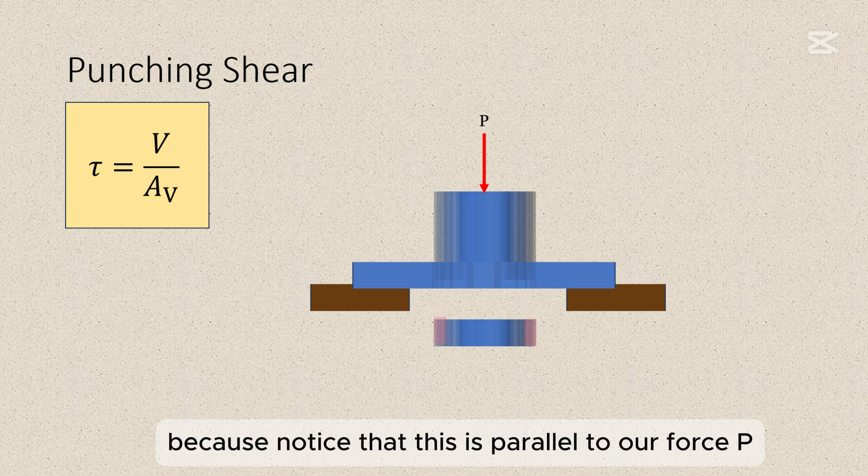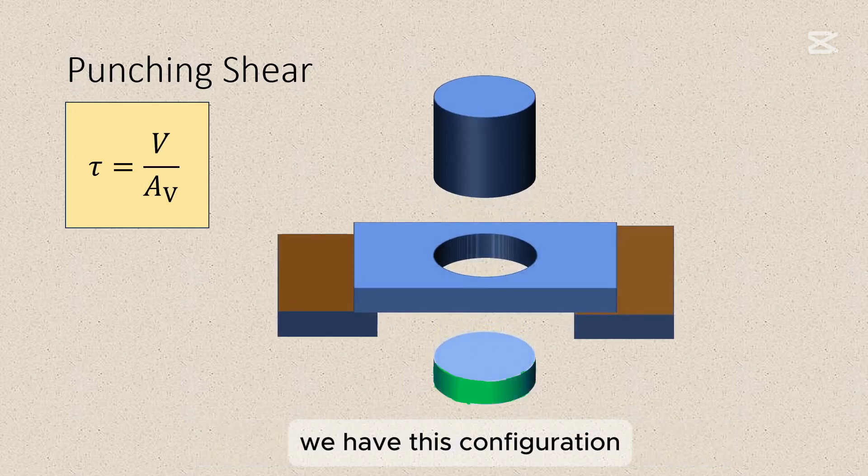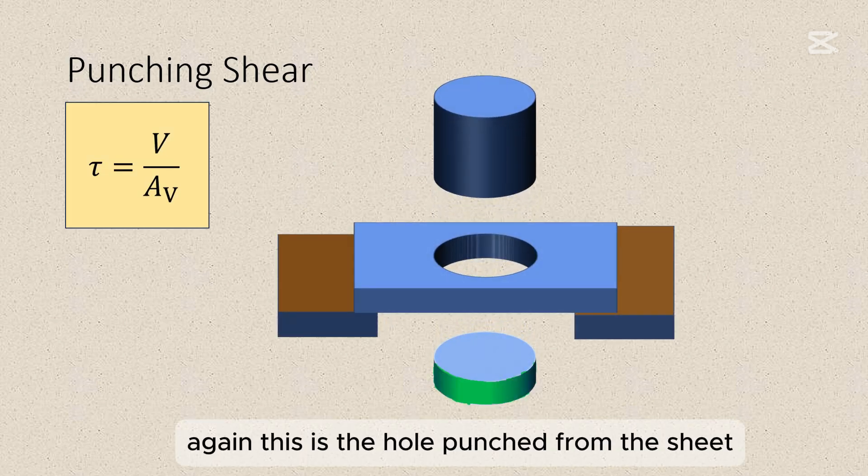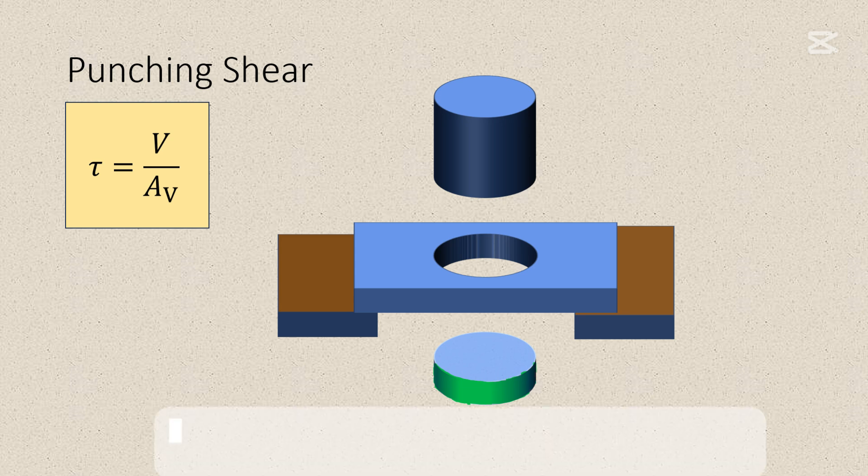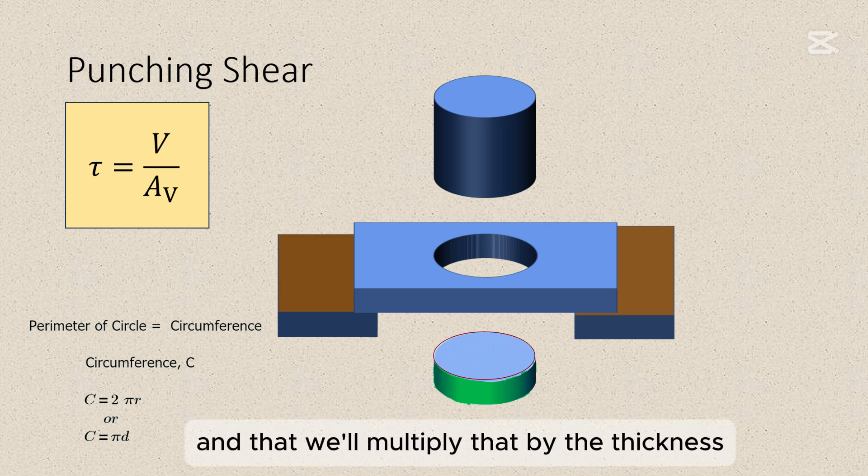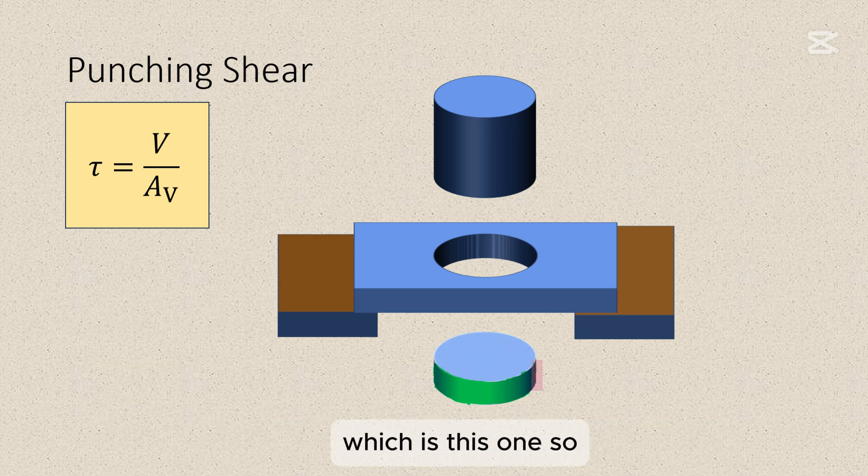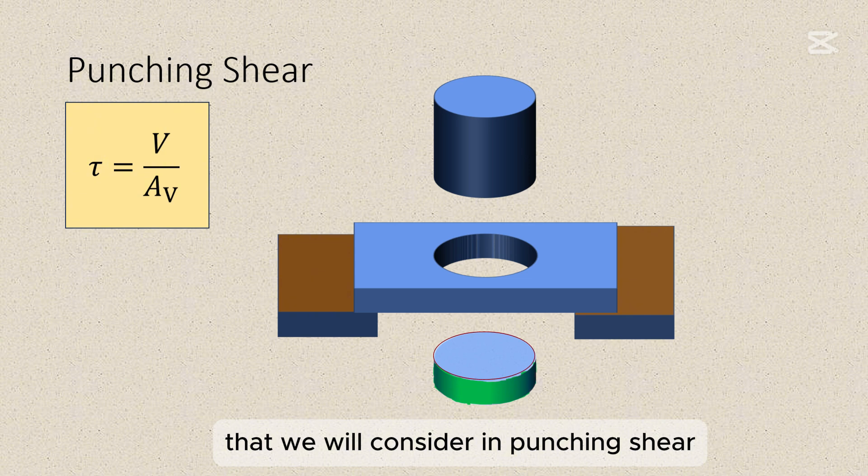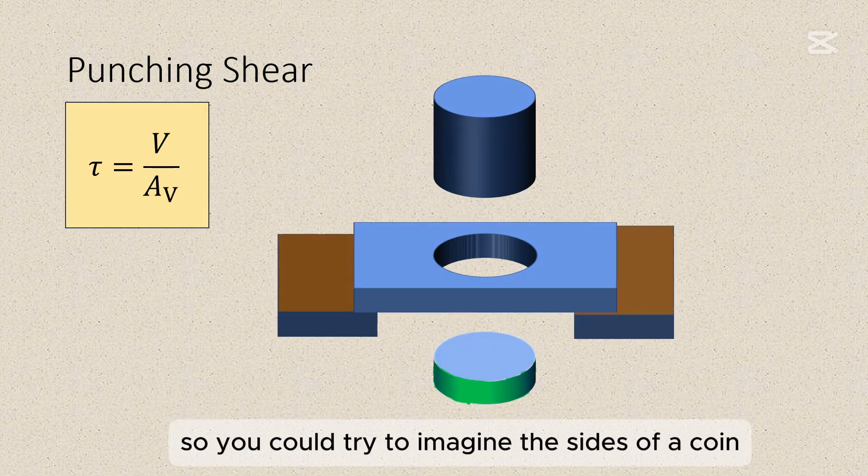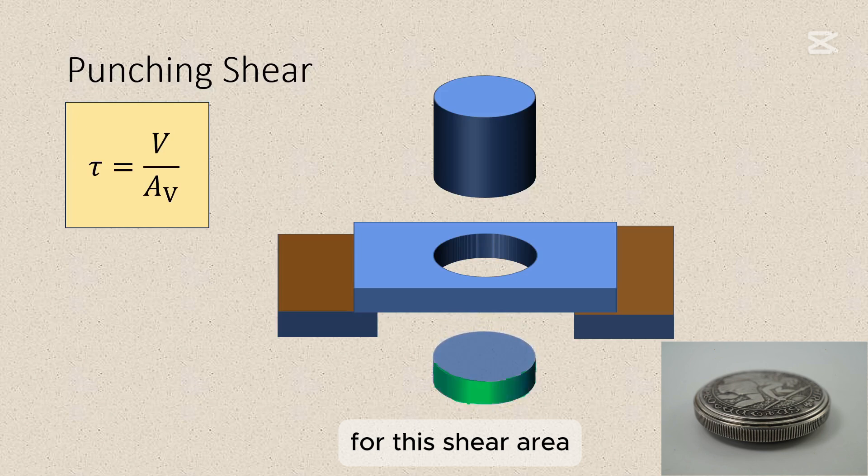Because notice that this is parallel to our force P and so if you want to visualize that properly, we have this configuration. Again, this is the hole punched from the sheet and then our shear area is the one colored in green. Notice that this area can be obtained by getting the perimeter of the circle or the sum of the sides and then we'll multiply that by the thickness which is this one. So the perimeter times the thickness will account for this area. And so that will be the area that we will consider in punching shear. So you could try to imagine the sides of a coin for this shear area.